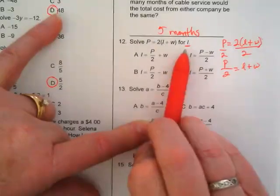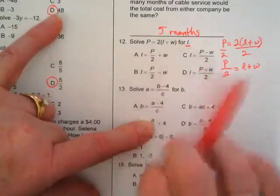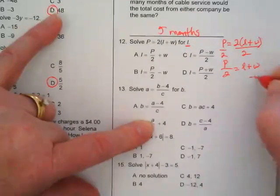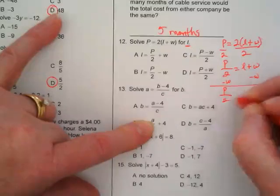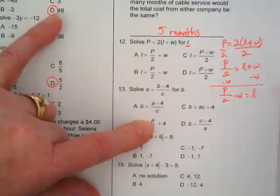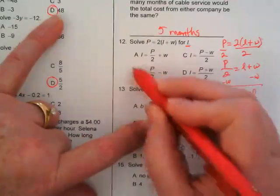I'm trying to solve for just length so I'm going to subtract width from both sides. That means P is going to be over 2 minus W equals the length, which makes B the right answer.